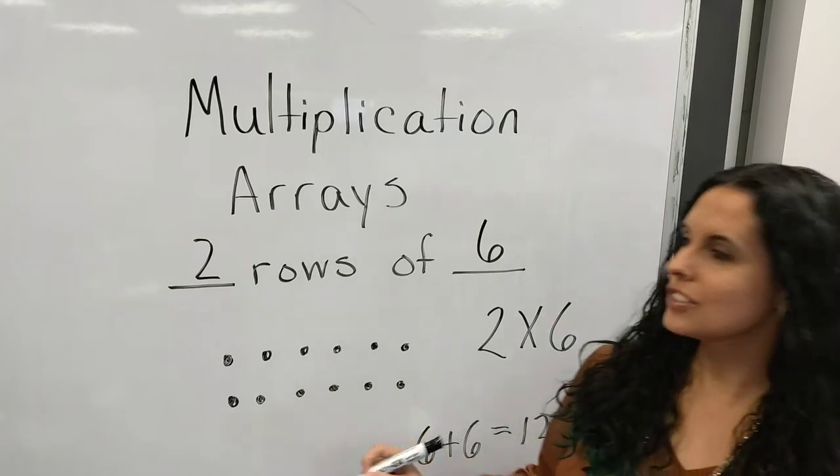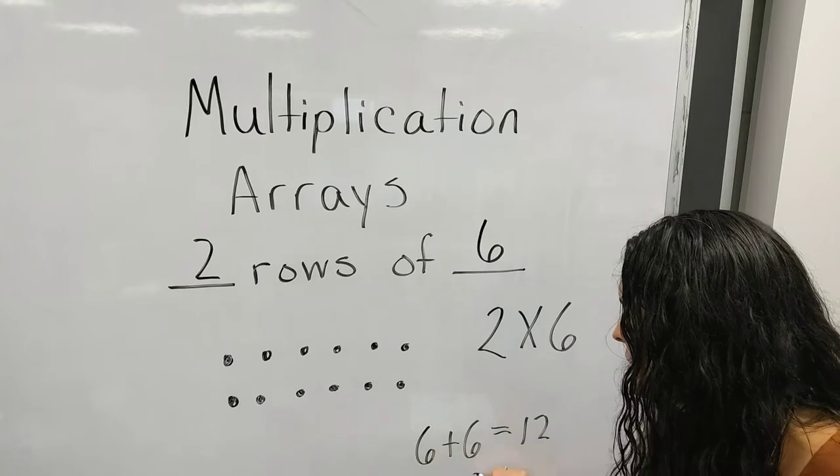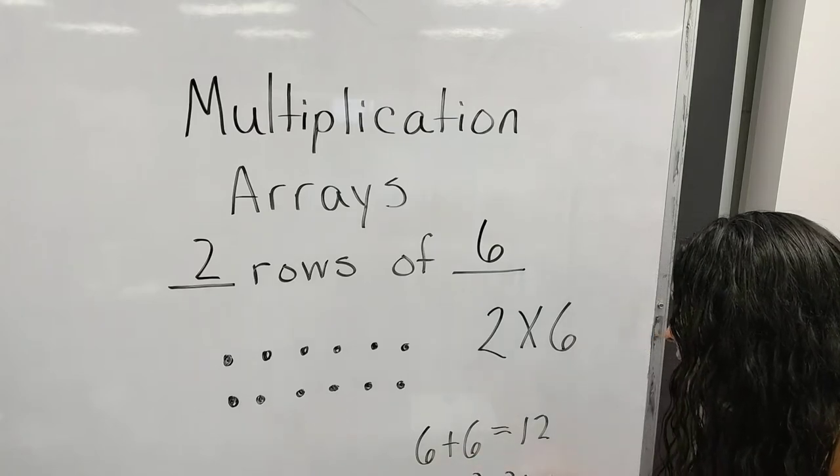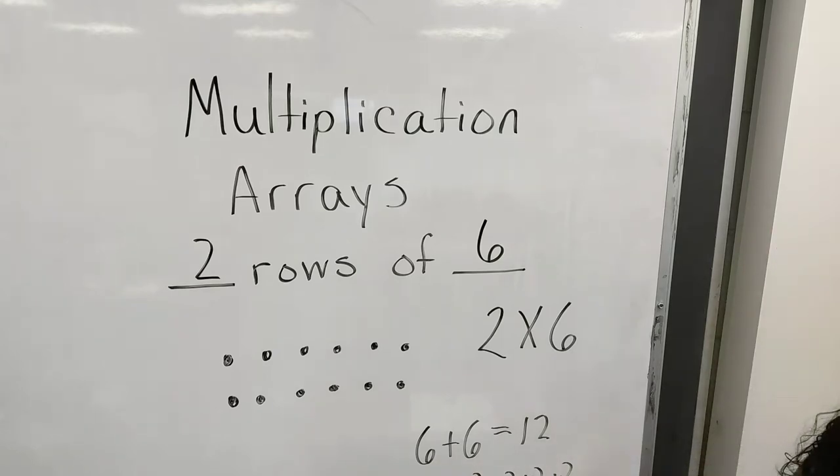You could also take two and add it six times. Two, four, six, eight, ten, twelve.